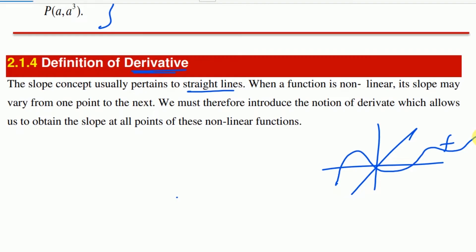Let's say this is function f, then this is the line l. Line l can take the slope of the derivative. When the function is linear, the slope may vary from one point to the next point. We must therefore introduce the notion of derivative.